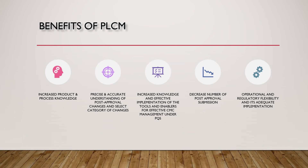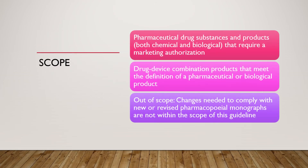Regulatory members are encouraged to provide publicly available information, preferably on their respective websites, about the implementation of ICH Q12 in their region, especially regarding regulatory considerations. The scope of ICH Q12 covers pharmaceutical drug substances and products, including both chemical and biological products that require a marketing authorization, as well as drug-device combination products meeting the definition of pharmaceutical or biological product. Changes needed to comply with new or revised pharmacopoeia monographs are not within the scope of this guideline.